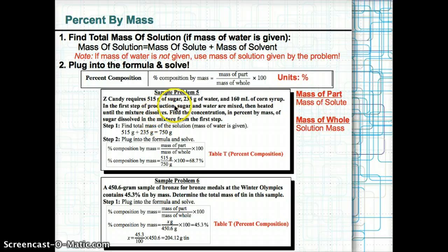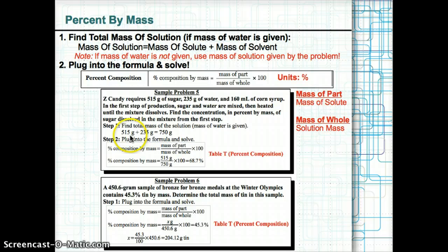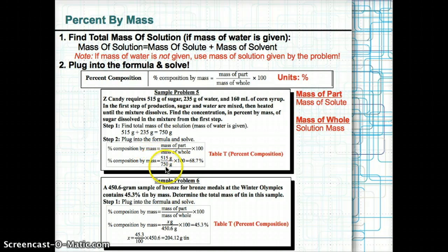Sample problem 5: Z Candy needs 515 grams sugar and 235 grams water mixed and heated. Find the concentration in percent by mass. Add 515 g sugar + 235 g water = 750 g solution. Then: percent composition = (515 g sugar ÷ 750 g solution) × 100% = 68.7%.